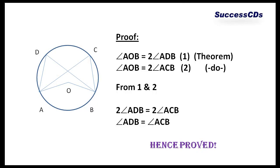Now let's have a look at the proof. Angle AOB, which is the angle subtended at the center by arc AB, is 2 times angle ADB — by theorem number 7. Similarly, angle AOB will also be equal to 2 times angle ACB — again by theorem number 7.